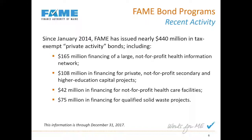Since 2014, we've issued nearly $440 million of these bond types, including $165 million for a large not-for-profit health information network, $108 million for not-for-profit secondary and private higher education capital projects such as Kent's Hill, Thomas College, and similar institutions, $42 million for healthcare facilities including hospitals, nursing homes, and healthcare office buildings, and $75 million for qualified solid waste projects including recycling entities and anaerobic digester projects.